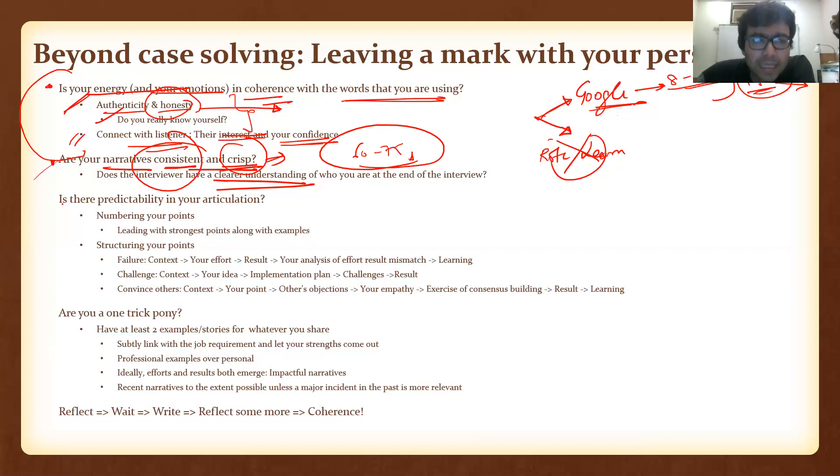Third thing, is there predictability in your articulation? This flows from crispness. Numbering your points. Let's say someone asks me, 'What are your strengths?' You could just start by saying 'blah, blah, blah,' or you could say, 'I want to talk about my top two strengths or top three strengths.' Or let's say someone gives you a situation and asks, 'What are your recommendations?'